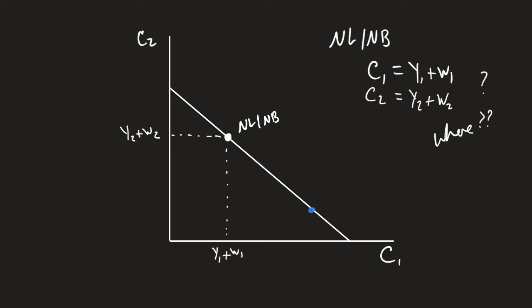Because what if I'm over here? What if this is the choice of consumption? So what about this point? What if this one, which is C1 and C2, what if it's this one? Well, what do I notice? I am consuming more than my current resources. How am I able to consume more than my current resources?